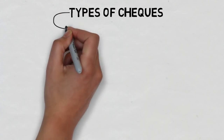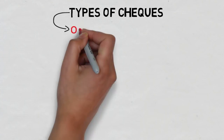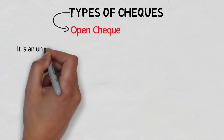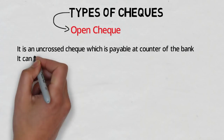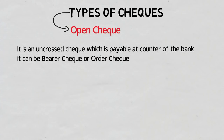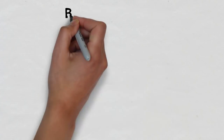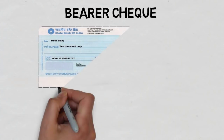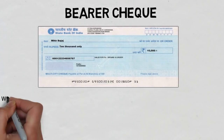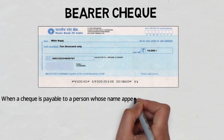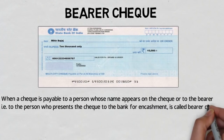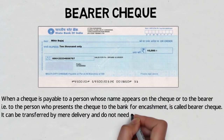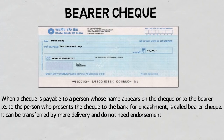Now we move to the different kinds of checks. The first one is the open check. An open check is an uncrossed check which is payable at the counter of the bank, and it can be a bearer check or an order check. A bearer check is when a check is payable to a person whose name appears on the check or to the bearer — for example, the person who presents the check to the bank for encashment. It can be transferred by mere delivery and does not need endorsement.